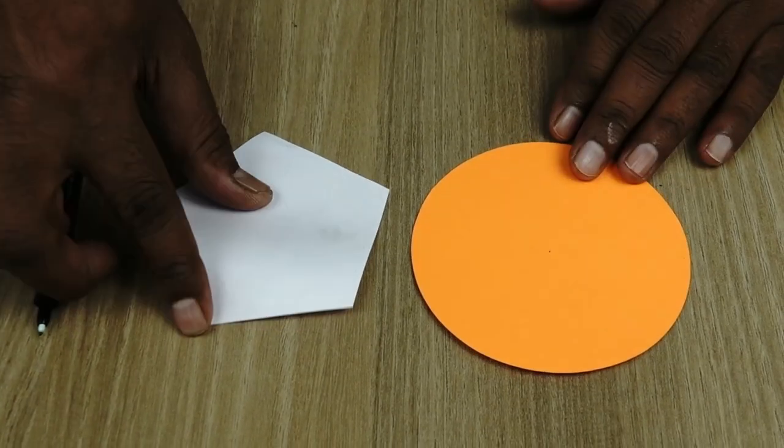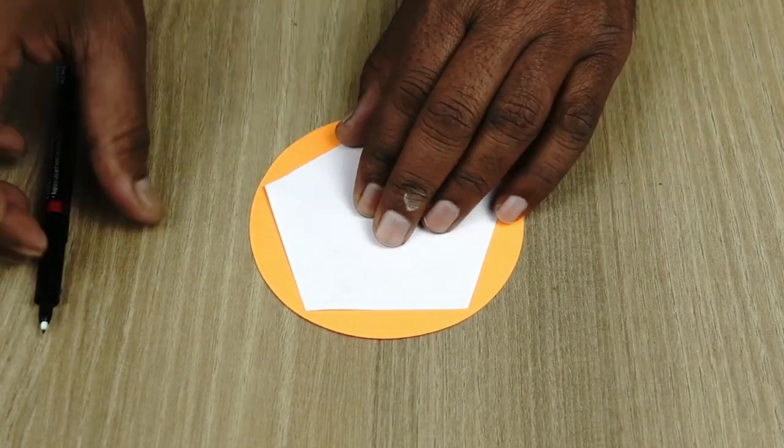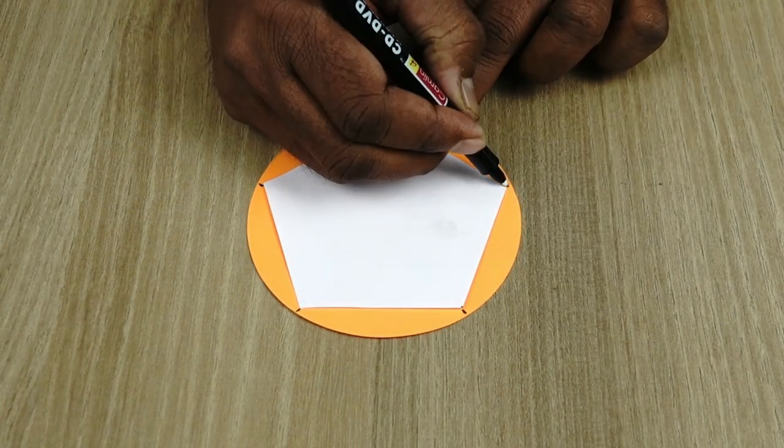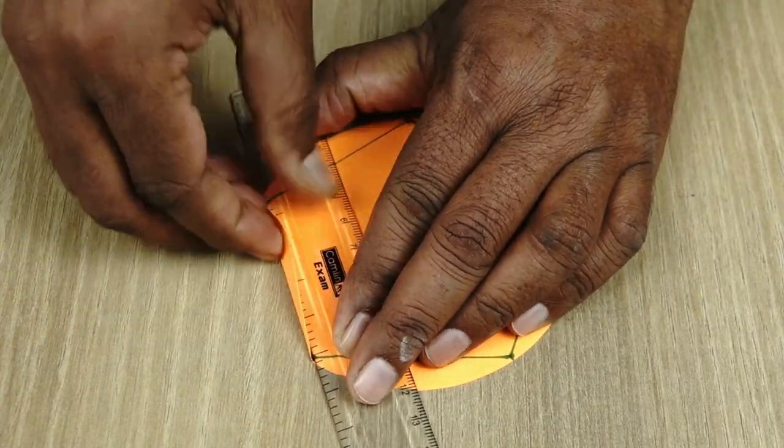First we are going to cut circles out of colored papers and then take the pentagon and put it on the circle and mark all the vertices. Then we are going to draw the lines such that we draw the pentagon.